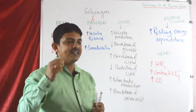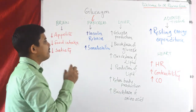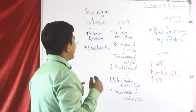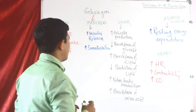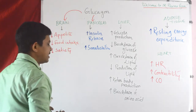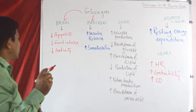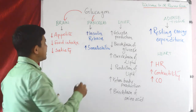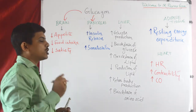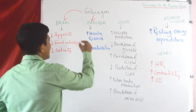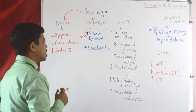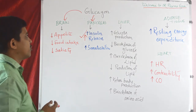Regarding glucagon's effects on different organs: in the brain, it reduces appetite, reduces food intake, and reduces satiety. In the pancreas, glucagon promotes release of insulin and somatostatin — so glucagon stimulates increased insulin release as well as somatostatin release.